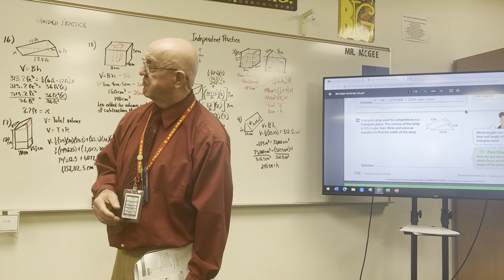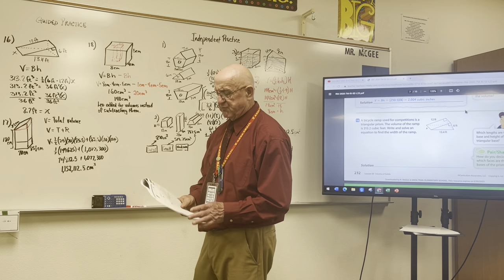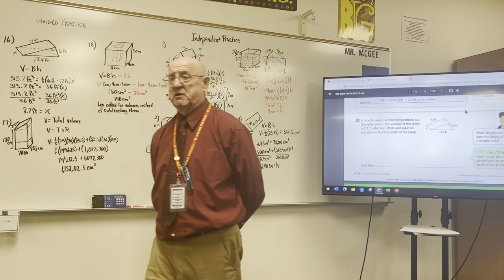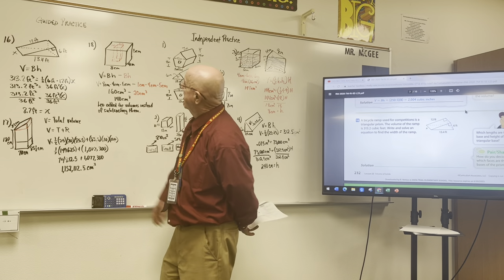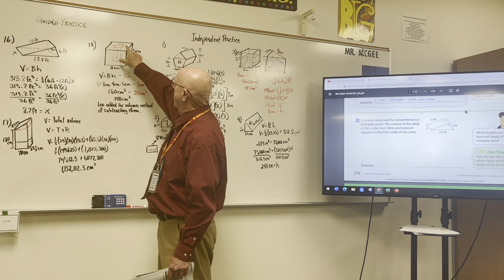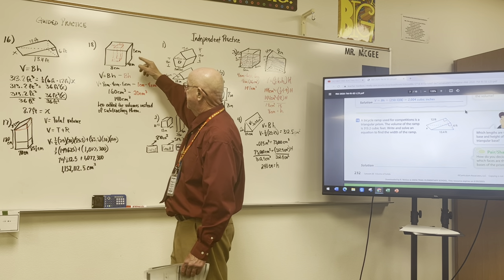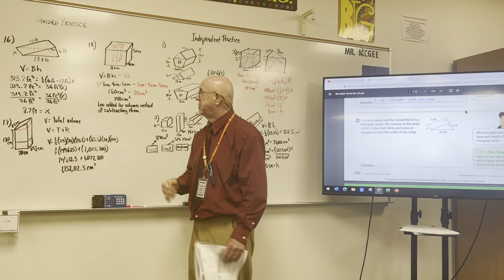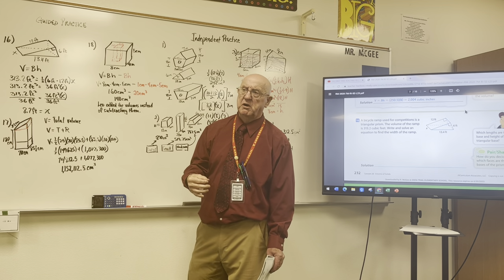Now, those are some big numbers, and I would expect you would probably use a calculator to do that. Number 18 is kind of one of those questions where you ask: what are they really asking me? They're giving you a rectangular prism and you're supposed to find the volume, but what they've done is cut the middle of that rectangular prism out. So we find the volume of the full black prism — that's 8 centimeters times 4 centimeters times 5 centimeters, which is 160 centimeters cubed.